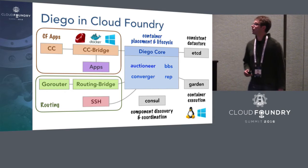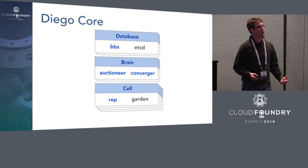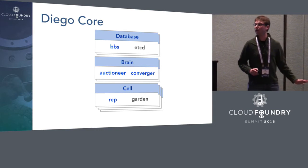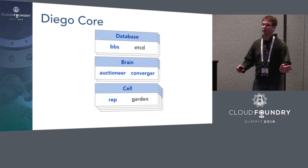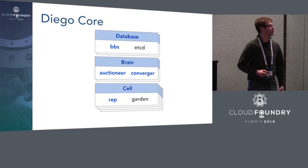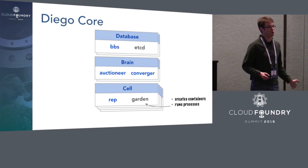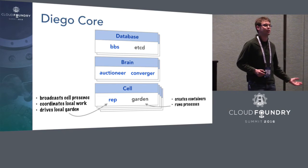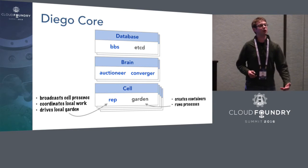In the Diego core, there are really three types of VMs. At the bottom, we have a large group of VMs called cells, where we actually create containers and execute workloads in them. On each cell there's a local Garden process running — that can be Garden Linux, Garden Windows, or the coming Garden RunC. Garden knows how to create containers and run processes in them, but it doesn't participate in the broader distributed system. The other Diego component on the cells is called the rep, which broadcasts the cell's presence, receives work from the system, reports back, and drives Garden to make containers.